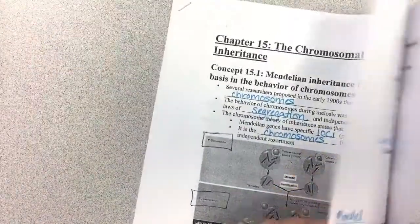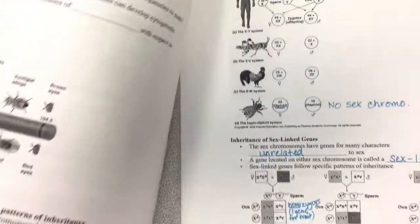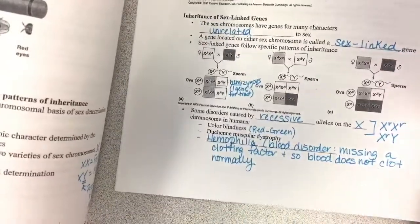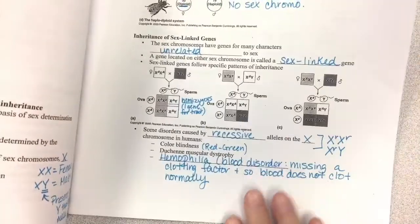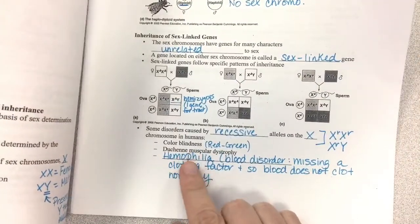Okay, so we left off - we had skipped the second section and gone to the third section, and we talked about sex-linked traits. So this is where we had left off, about colorblindness, muscular dystrophy, and hemophilia.